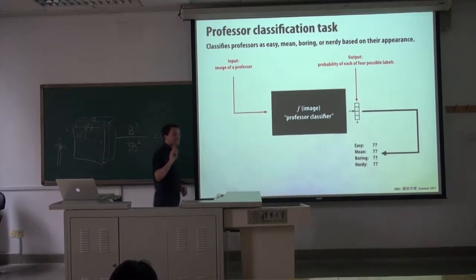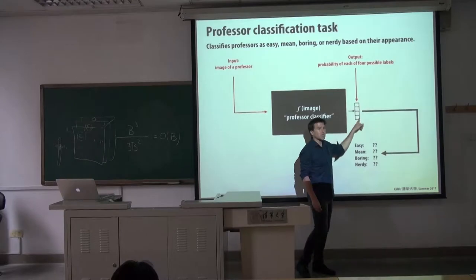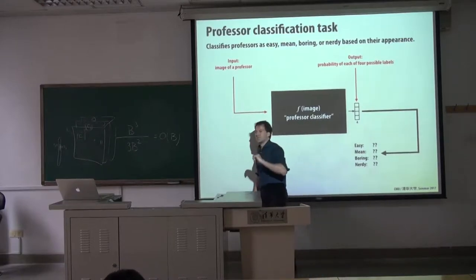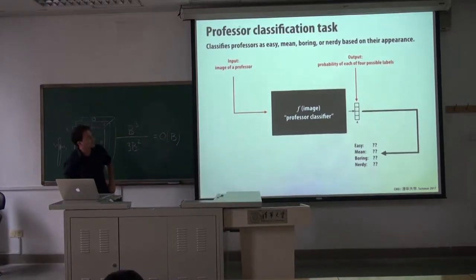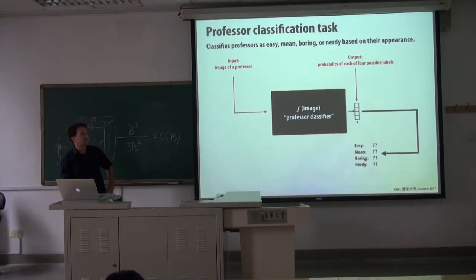It's not actually going to say which professor. What it's going to do is output a probability distribution on how likely it is that the professor in the photograph is in each of those four categories. So the input is an image, and the output is a vector of four numbers — the probabilities for easy, mean, boring, and nerdy.